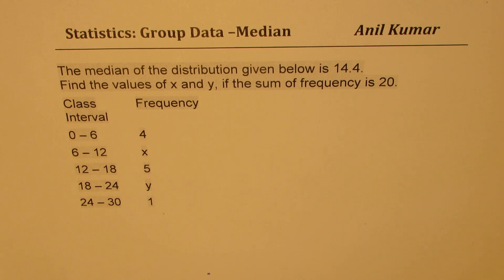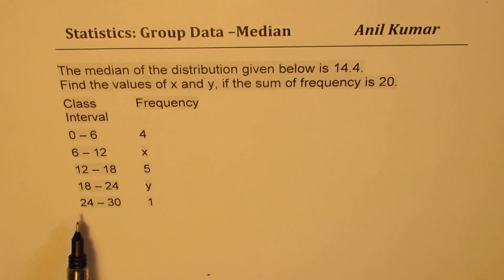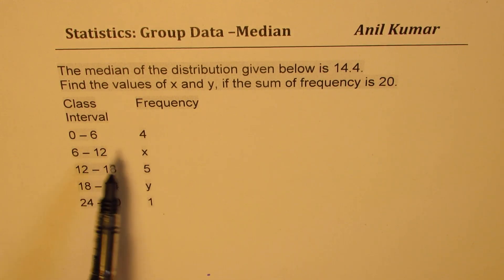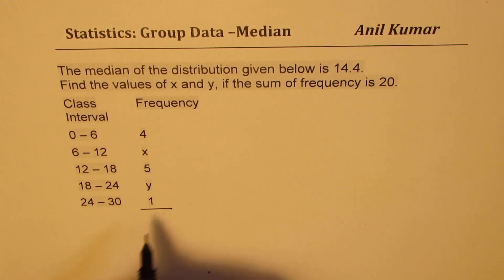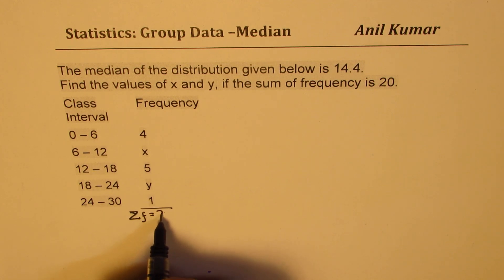The question here is: the median of the distribution given below is 14.4. Find the values of X and Y if the sum of frequency is 20. The class intervals given are 0 to 6, 6 to 12, 12 to 18, 18 to 24, and 24 to 30. The frequencies respective to all are 4, X, 5, Y, and 1. We are also given that the sum of the frequency is equal to 20.